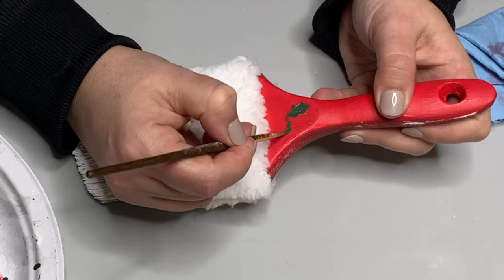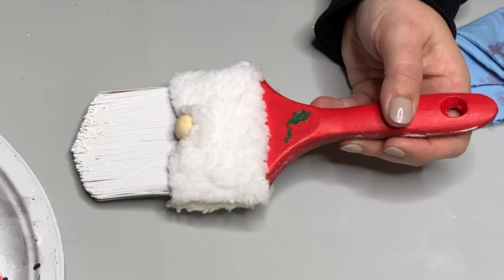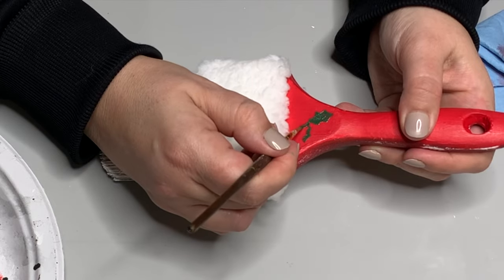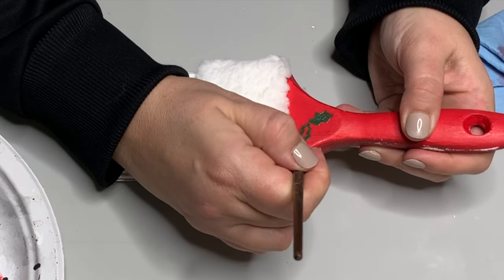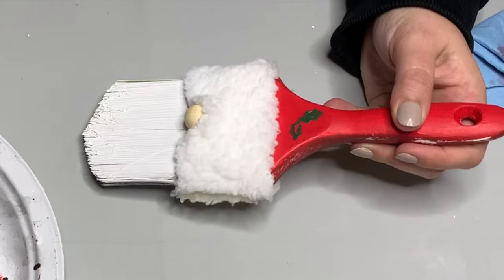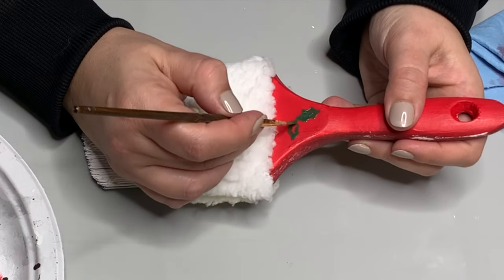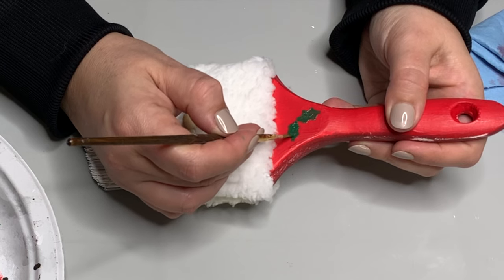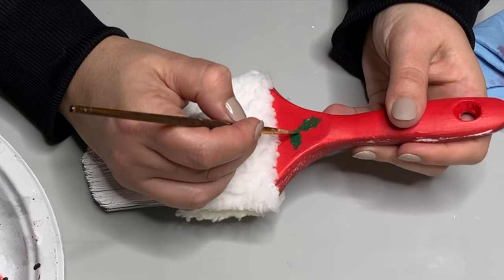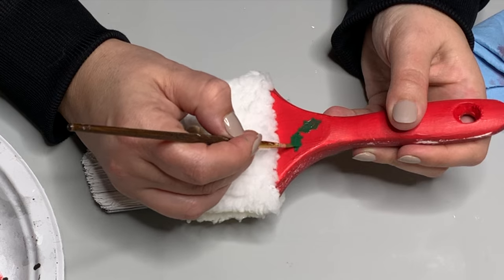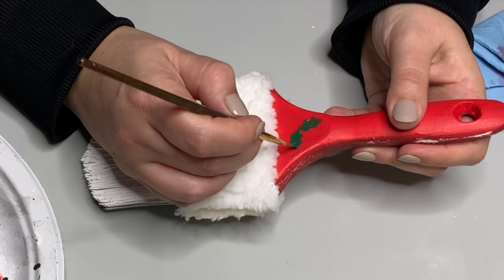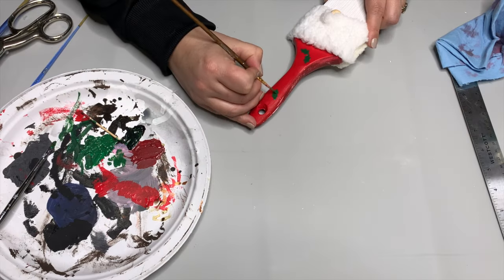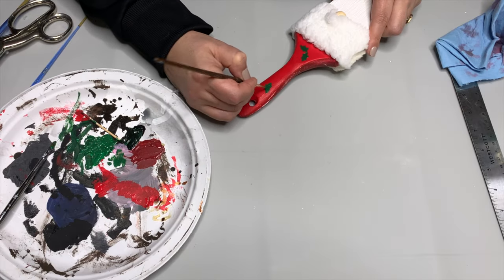If you have Christmas fabric lying around, cut out the little pattern pieces and decoupage them onto the handle. If you have tissue paper that's really festive for the holidays, decoupage that onto the handle. You don't have to paint these little designs. If you don't want to paint them, on the summer one I did a little flamingo—it's super fun and easy. Whatever you're comfortable with, you can do.